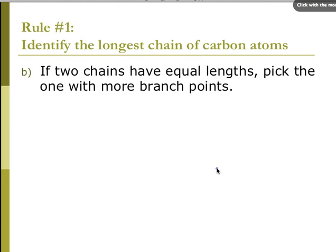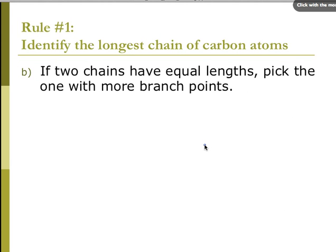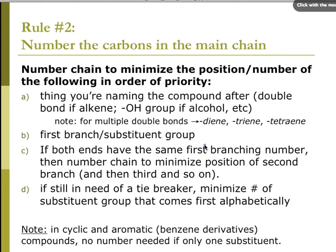If two chains have equal lengths, you pick the one with more branch points. Rule number two: number the carbons in the main chain to minimize the position number of the thing you are naming the compound after — meaning a double bond, an OH group, etc. If there is more than one double bond, use the prefixes di-, tri-, tetra-.